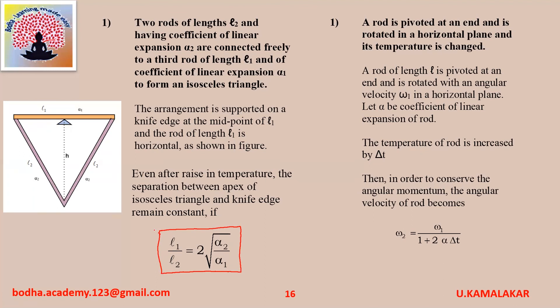A rod is pivoted at its end and rotated in a horizontal plane, and its temperature is changed. Let L be the length of the rod, omega1 be the angular velocity, and alpha be the coefficient of linear expansion of the rod. When temperature is increased by delta T, in order to conserve angular momentum, the angular velocity becomes omega2 equals omega1 divided by (1 plus 2 alpha delta T).